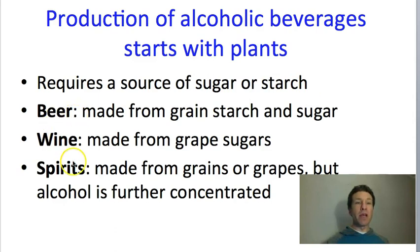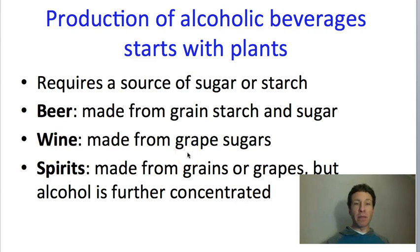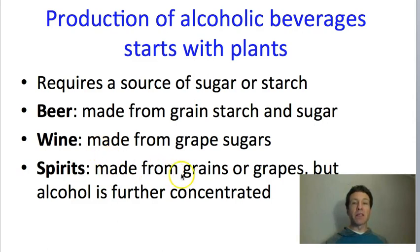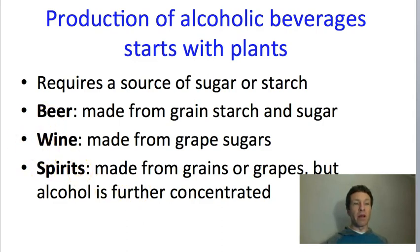Why are we talking about making alcoholic beverages in a class about plants? In all cases, making an alcoholic beverage starts with a plant, because the process of fermentation requires sugar — either sugar itself or starch that can be broken down into sugar. There are three types we'll talk about. First, beer, made from grain starch and sugar. Second, wine, made from grapes, which have primarily sugars as their carbohydrate. And third, spirits — alcohols made from grains or grapes that are further concentrated after production, making them always stronger than beer or wine.